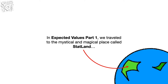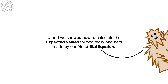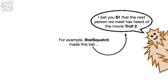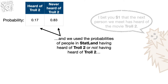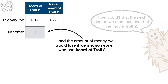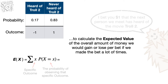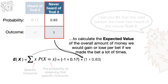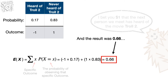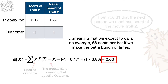In Expected Values Part 1, we traveled to the mystical and magical place called Statland, and we showed how to calculate expected values for two really bad bets made by our friend StatSquatch. For example, StatSquatch made this bet: 'I bet you $1 that the next person we meet has heard of the movie Troll 2.' We used the probabilities of people in Statland having heard of Troll 2 or not, and the amounts won or lost, to calculate the expected value per bet. The result was 0.66, meaning we expect to gain, on average, 60 cents per bet.